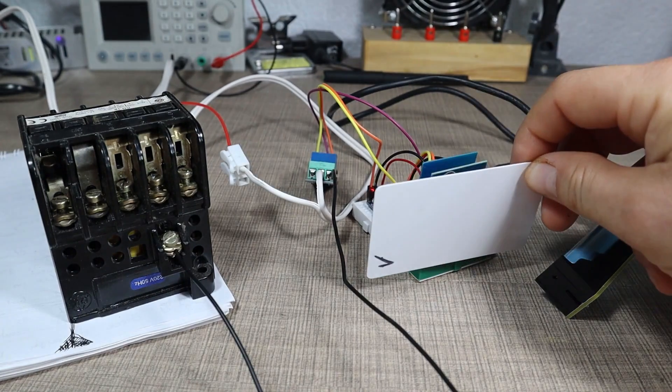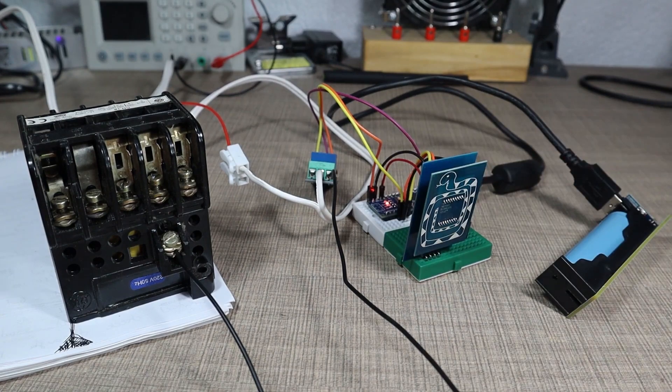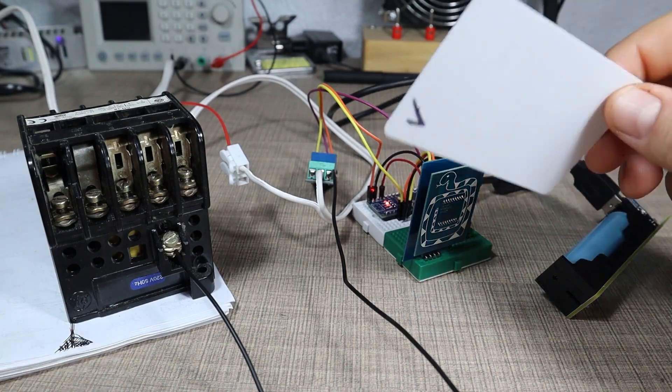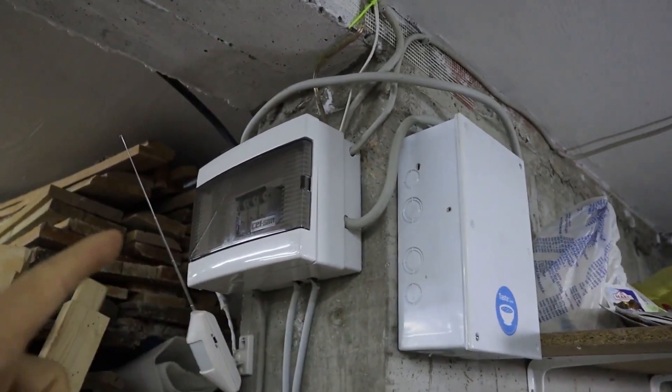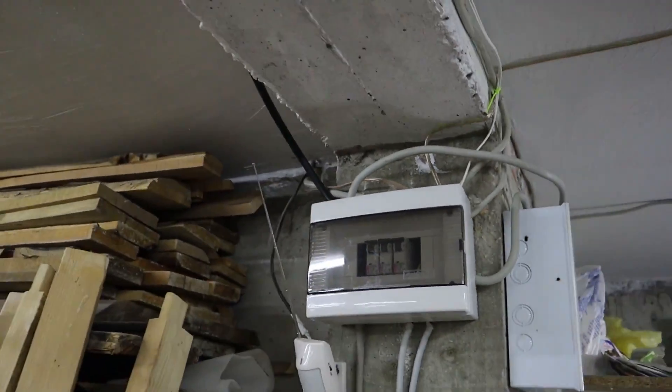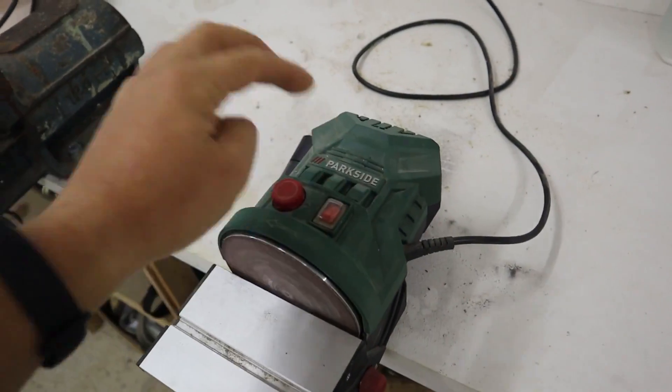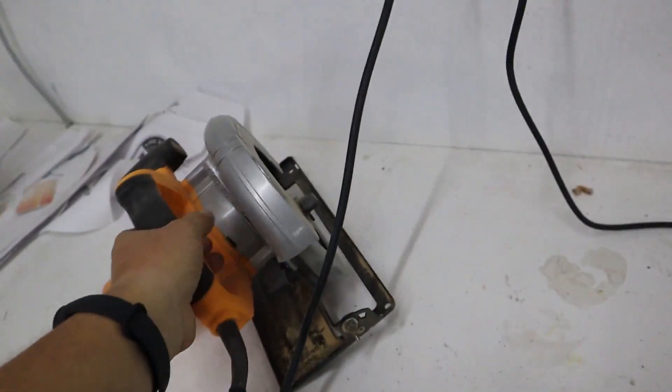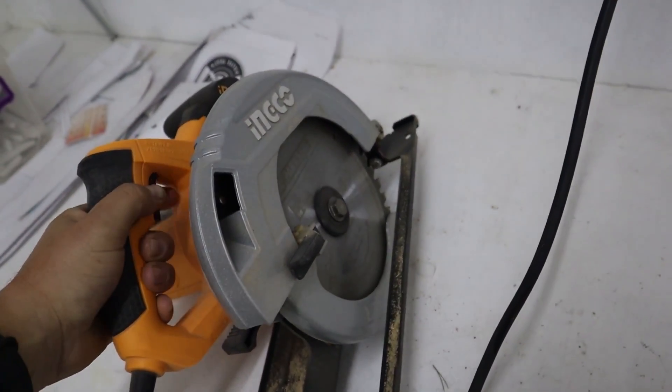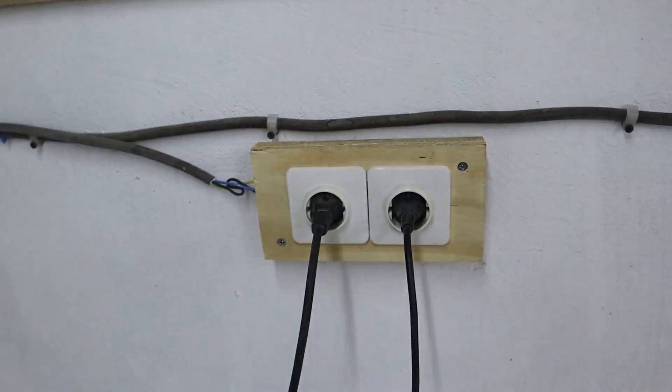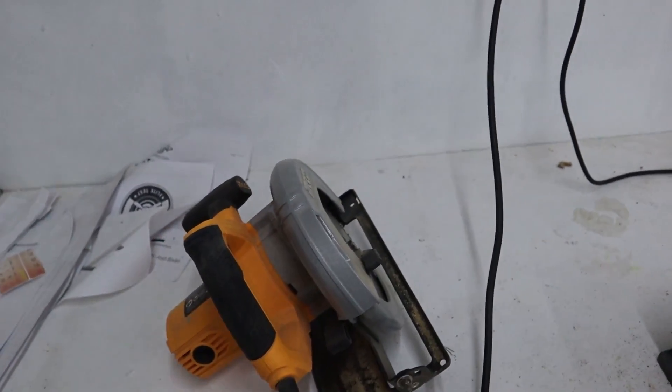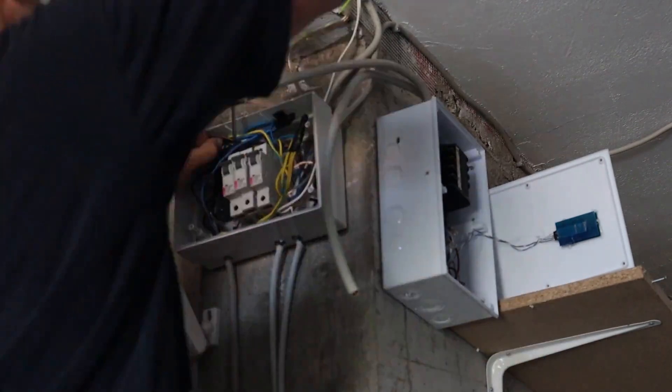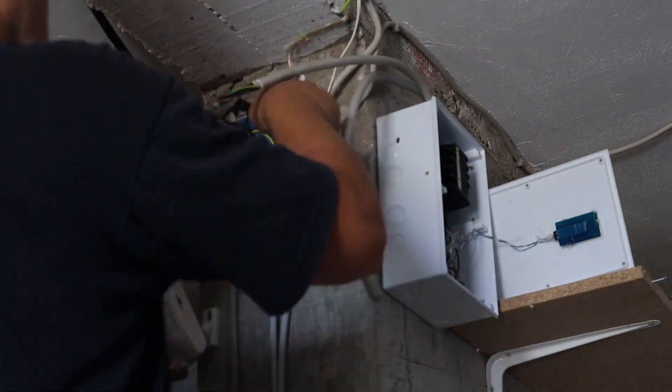That relay controls a much larger electrical switch called a contactor. A contactor can carry much heavier loads than a relay, enough so that he can comfortably run all of his workshop's electricals through the contactor, effectively cutting off power unless the correct RFID tag is present. Whether you've ever wondered how to use software to control high electrical loads or how to work with RFID tags, check this one out.